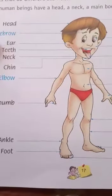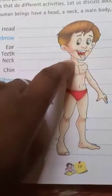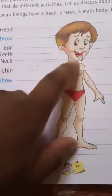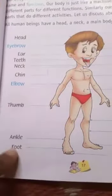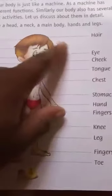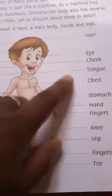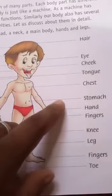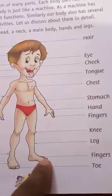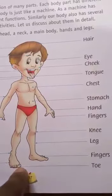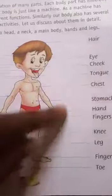If we go to see in detail — this is our head, these are our eyebrows, this is our ear, these are teeth, neck is here, chin is here. Elbow is here, thumb is here, ankle is here, foot is here. Similarly, hair is there, eye is there, cheek is there, tongue, chest, stomach, hand, fingers, knee, leg, fingers, and toes. This is our body and these names are the parts of our body.